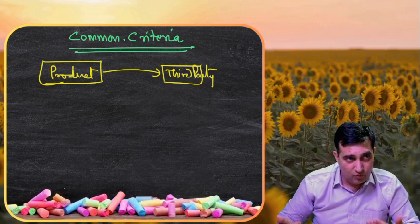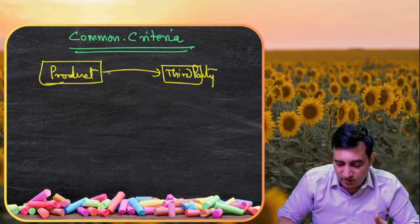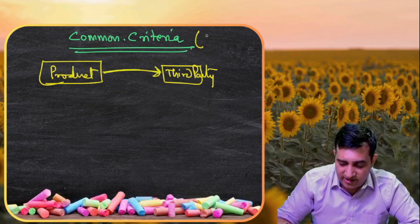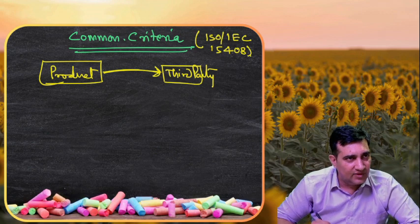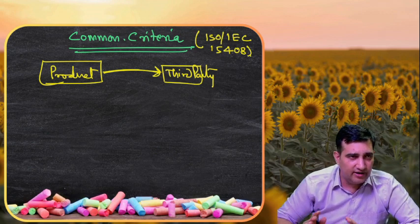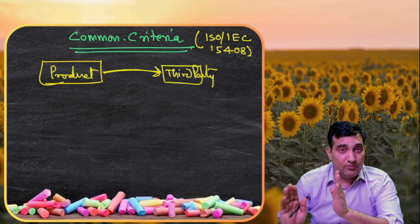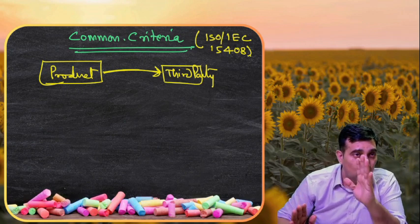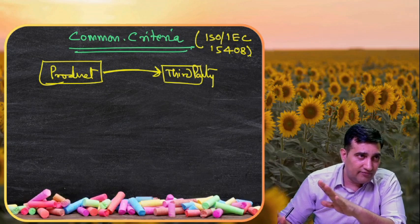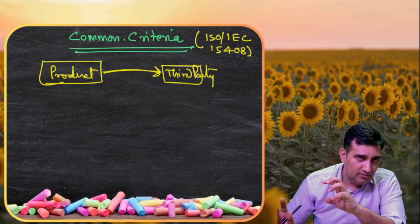Same way, when there are products they need to go with Common Criteria. Common Criteria is an ISO standard, ISO IEC 15408. And once your product is certified by them, then you can confidently say it will also be listed - your product will be listed on the Common Criteria website - that this particular product is certified.